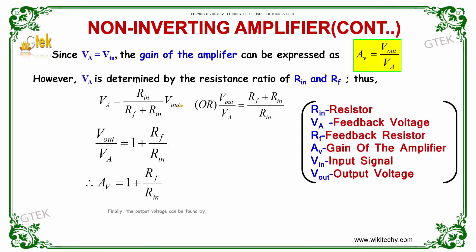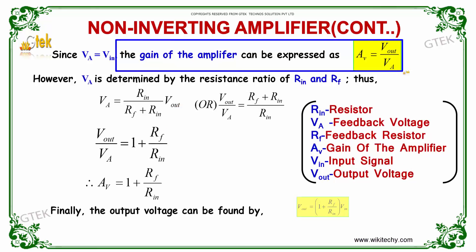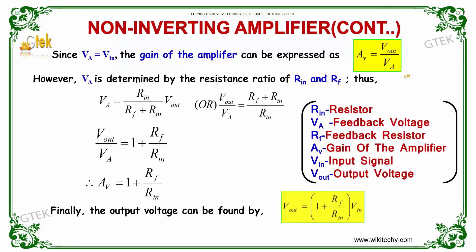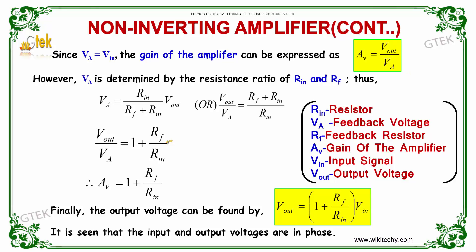Since VA is equal to VIN, the gain of the amplifier can be expressed as AV equals VOUT divided by VA. Here, AV indicates the gain of the amplifier, VOUT is the output voltage, and VA is the feedback voltage. VA is determined by the resistance ratio of RN and RF, and can be expressed as VA equals RN divided by (RF plus RN) multiplied by VOUT. This can be rearranged as VOUT divided by VA equals (RF plus RN) divided by RN.